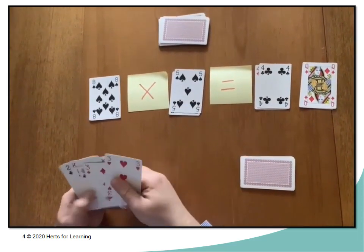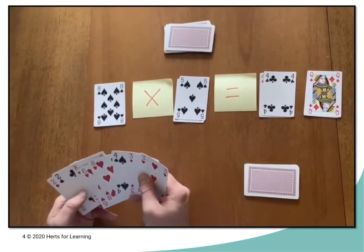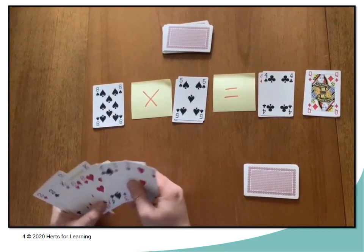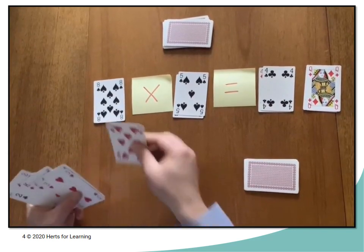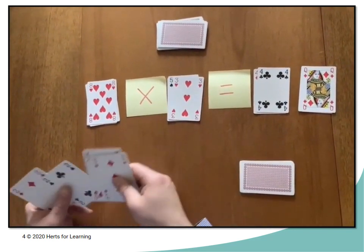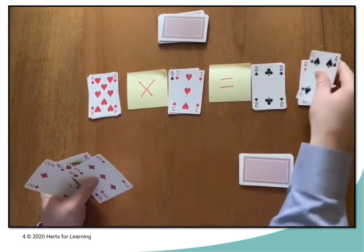So play passes back to player 1, who again is either going to lay a 4 digit number sentence using 4 of their cards. So we've got 8 multiplied by 3 is equal to 24.